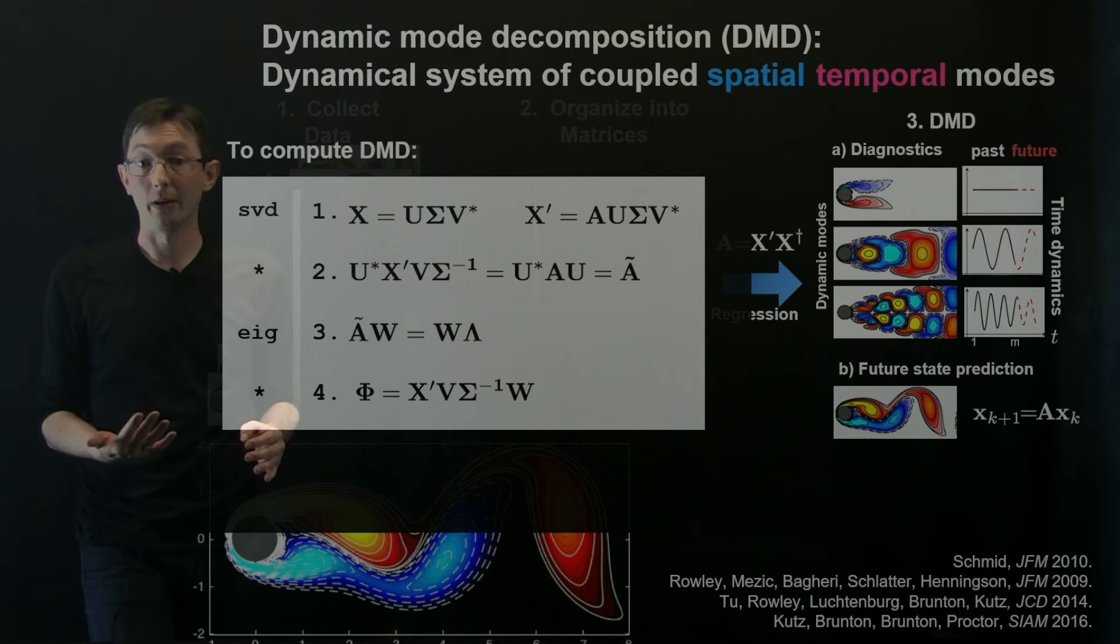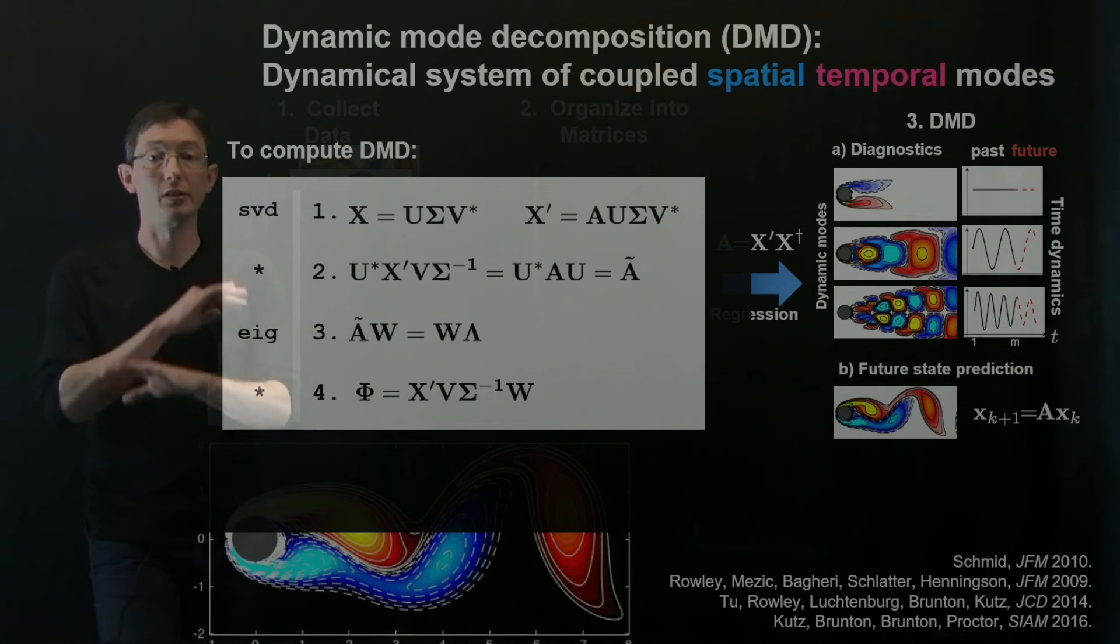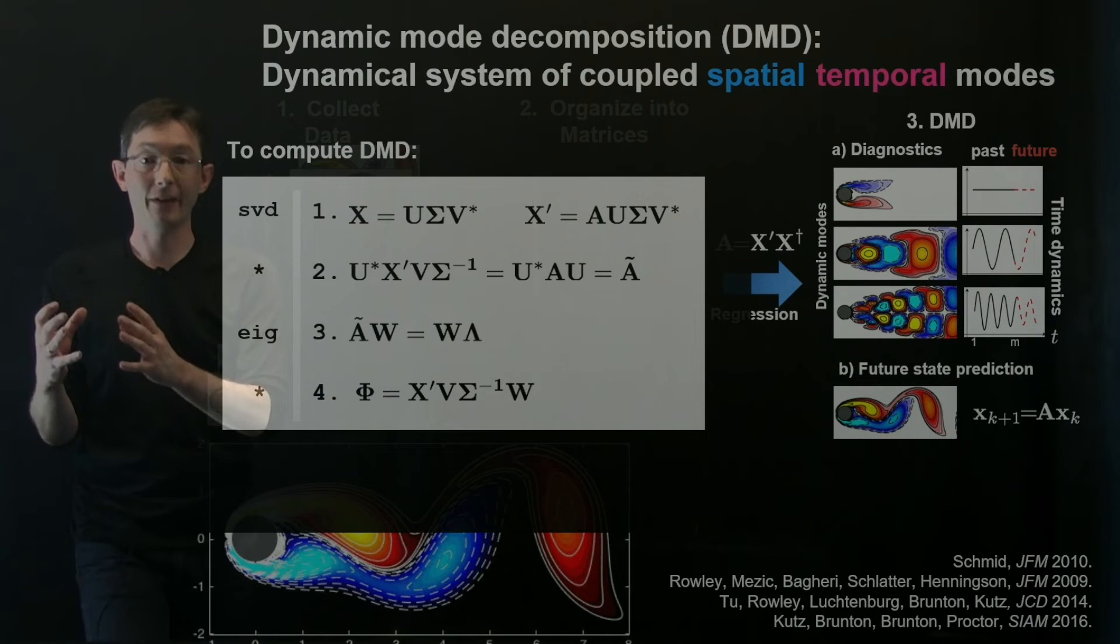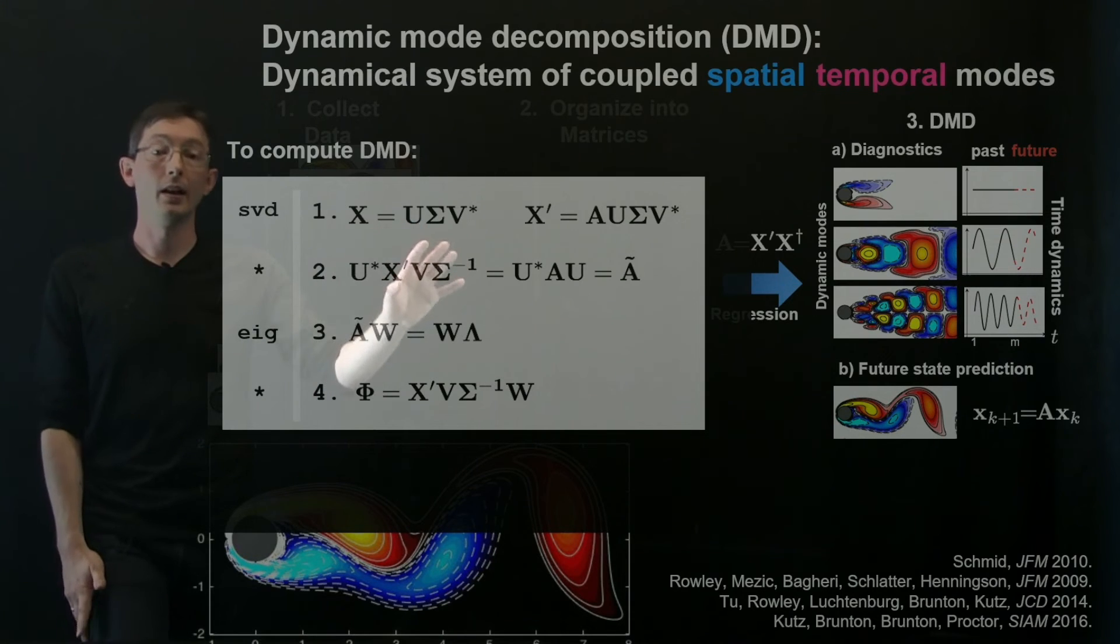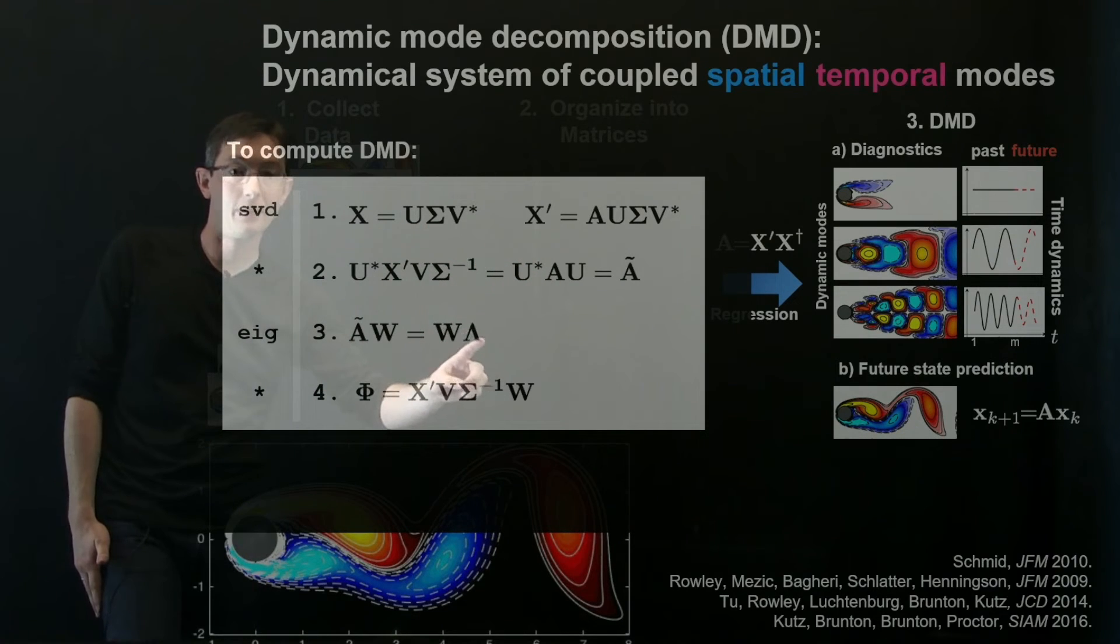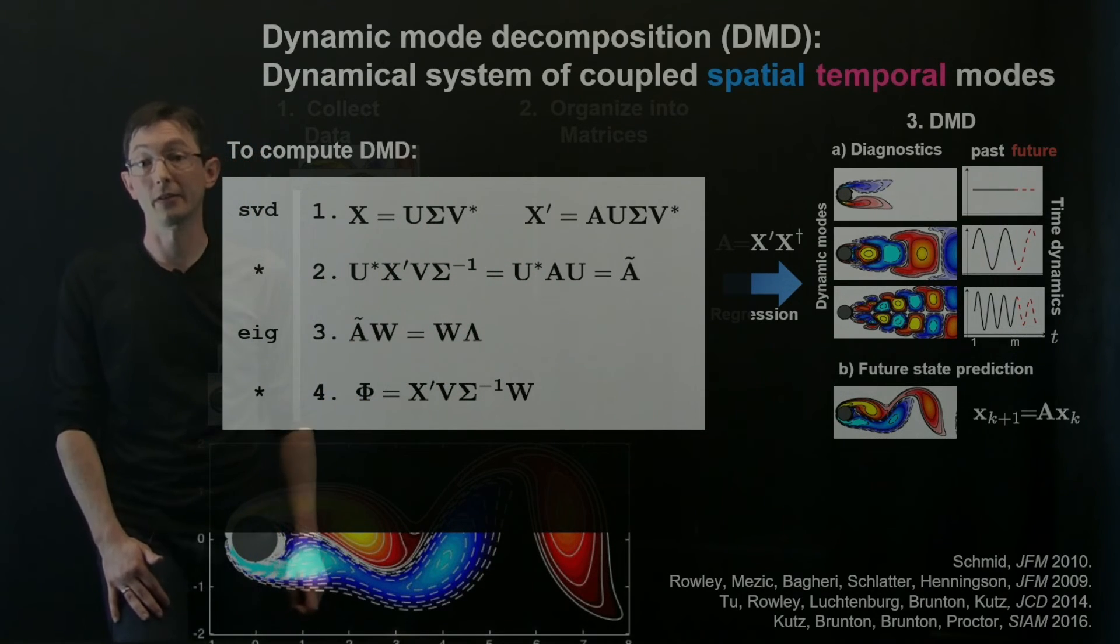You can get the eigenvalues and the eigenvectors of the big A matrix without ever actually computing the big A matrix. You're only working on this little A tilde matrix. So that's actually the entire DMD algorithm. It's really like four or five lines of code in MATLAB to do this entire procedure. It's super simple. If you have X and X prime, you can do all of this. And it's very, very fast and scalable to get these eigenvalues and eigenvectors.